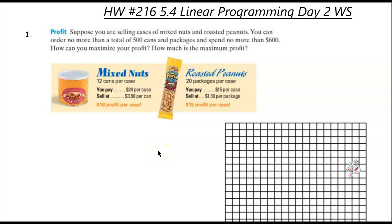Okay, number one. Suppose you are selling cases of mixed nuts and roasted peanuts. You can order no more than a total of 500 cans and packages and spend no more than $600. How can you maximize your profit and how much is the maximum profit?